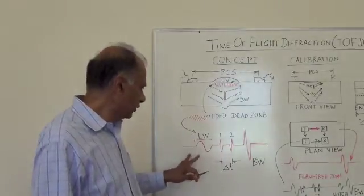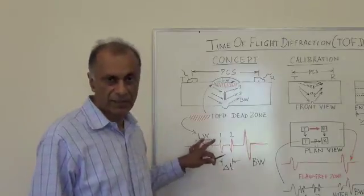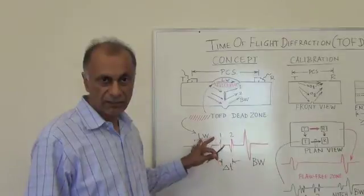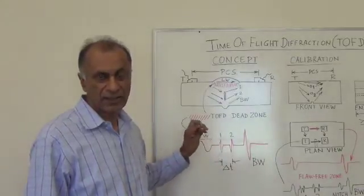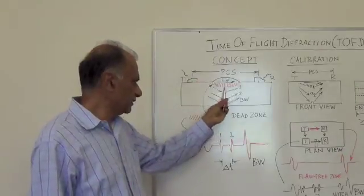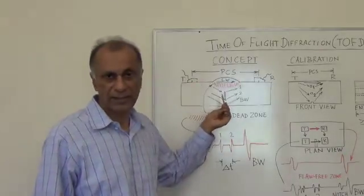Now one issue with TOFD is the lateral wave. The lateral wave has a certain width to it and because of that width it shadows any flaws which are just below the top surface and this area is actually called the TOFD dead zone.